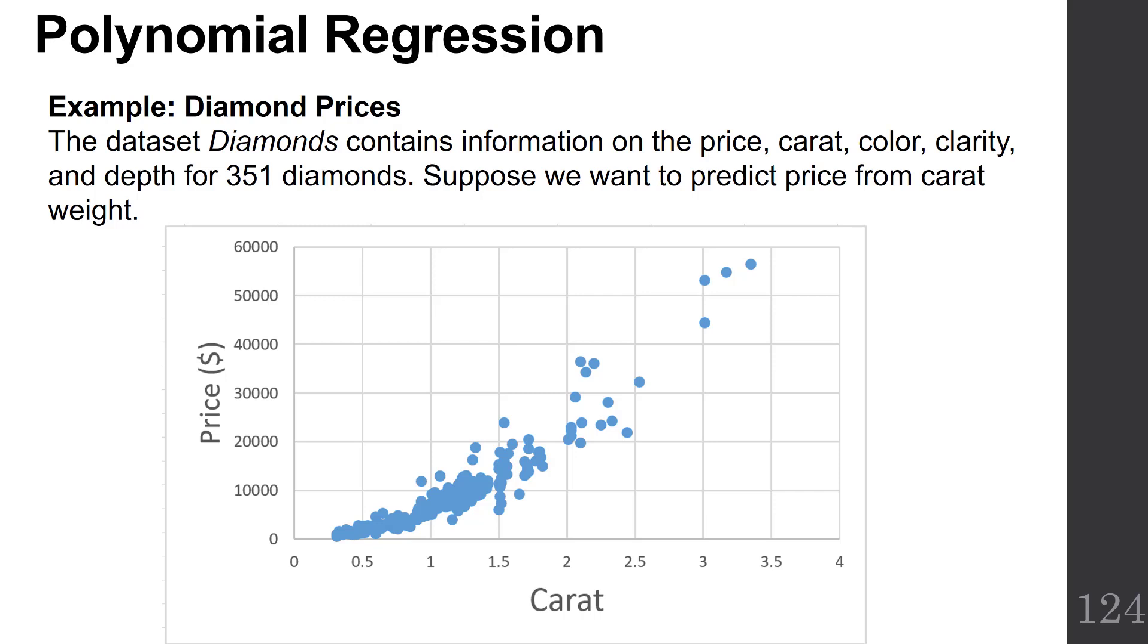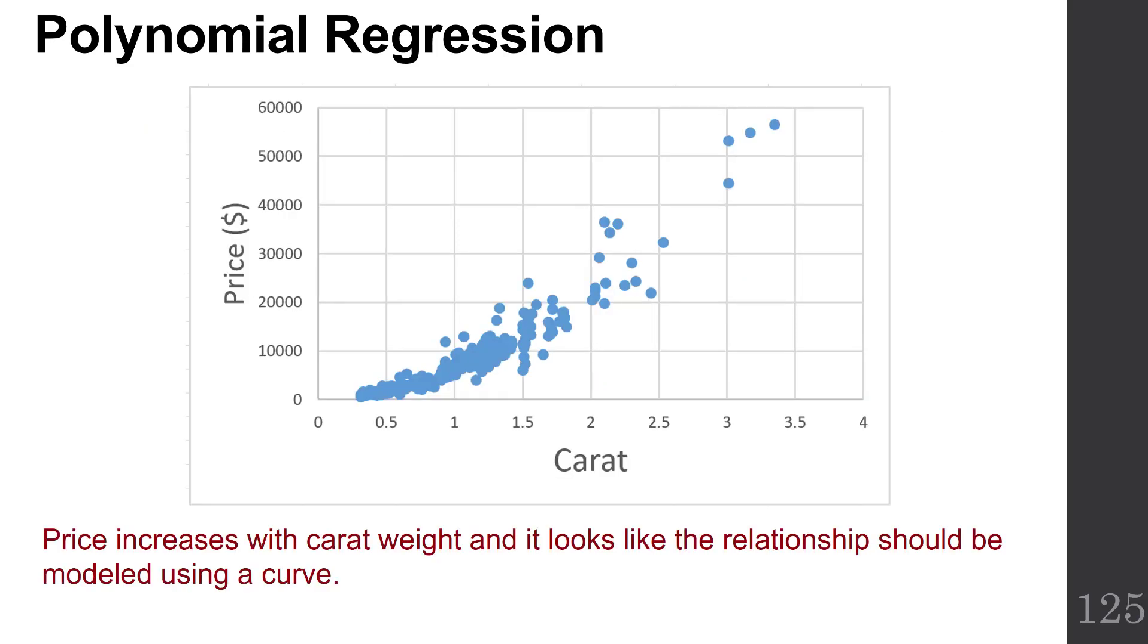Suppose we want to predict price from carat weight. We've got a scatterplot pictured here, and price increases with carat weight. It looks like the relationship should be modeled using a curve.